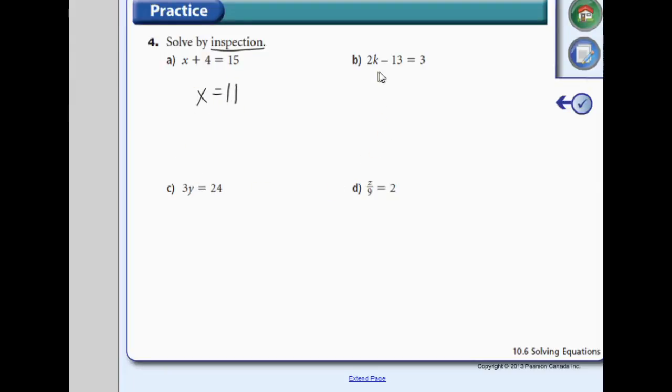2 times some number minus 13 equals 3. This gets a little tricky. So we need to know, first of all, what number in total minus 13 gives us 3. I know 16 minus 13 gives me 3. Okay, that's my first step.